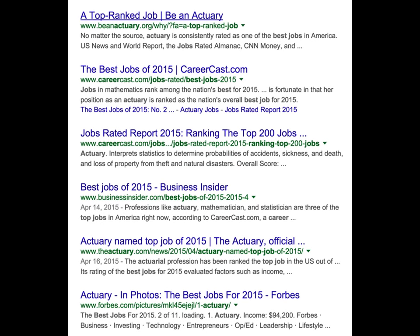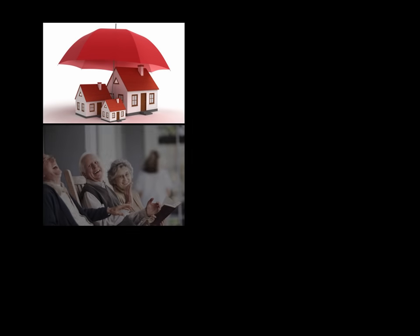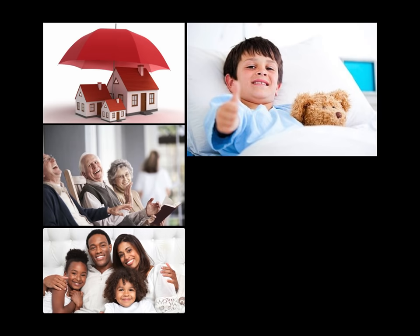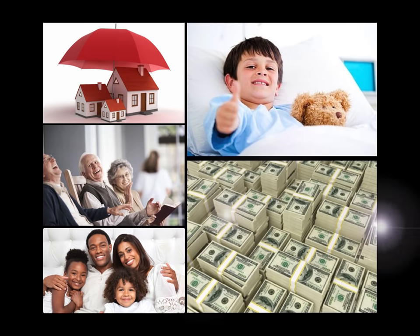Some people do call us arrogant, because we think highly of ourselves. But I think that's just because they're jealous. If you Google 'what is the number one job in the world,' you will see the actuary tops the majority of those lists. So if you want to secure homes, help the elderly, protect families, care for the sick, and make lots and lots of money, then actuarial science is for you.